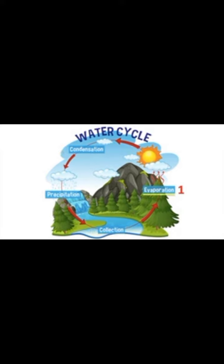First, evaporation takes place. This is when the sun heats up the water on land, in lakes, rivers and seas. The water is turned into a gas called water vapour. The water vapour rises into the sky.